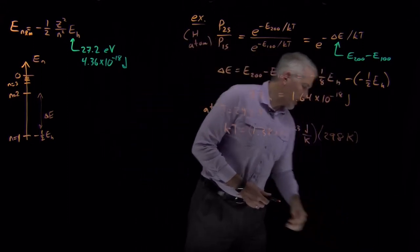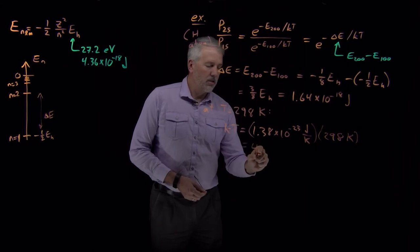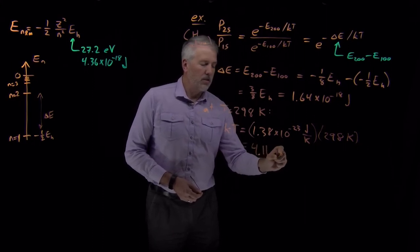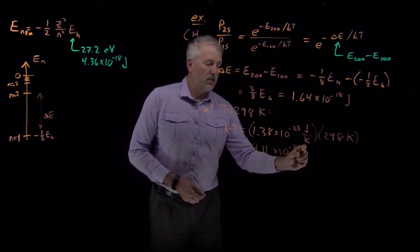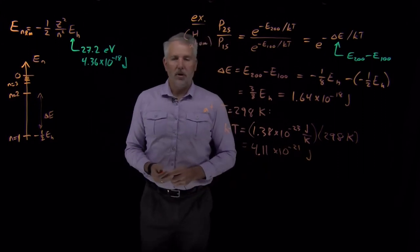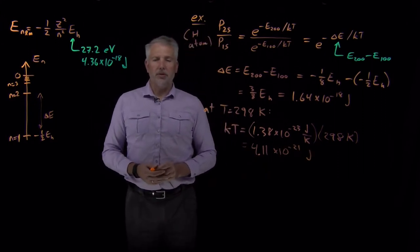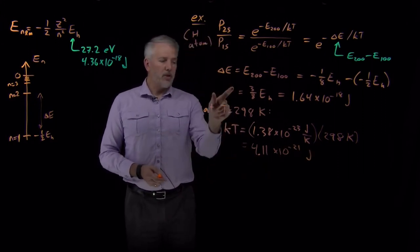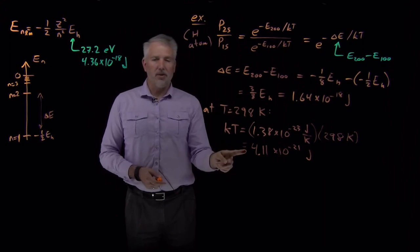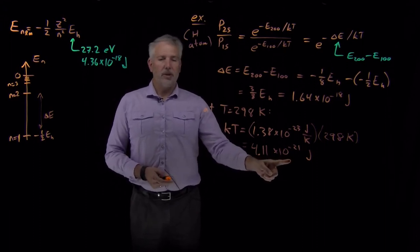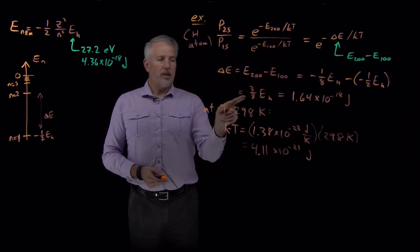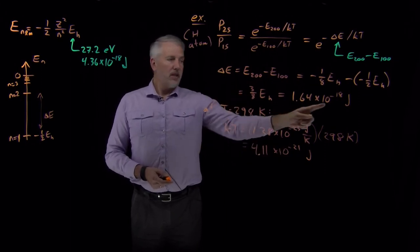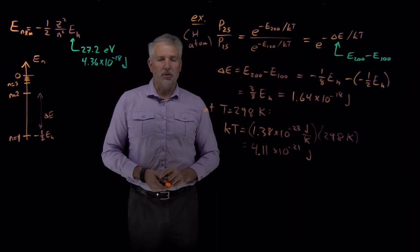And that number works out to be, again, something small, 4 times 10 to the minus 21 joules. So those are both small numbers, but notice that the small number that's kT is quite a bit smaller, 10 to the minus 21st, quite a bit smaller compared to the small number that's the delta E. That's still small, but it's 10 to the minus 18th joules. So this number is several hundred times larger than kT.